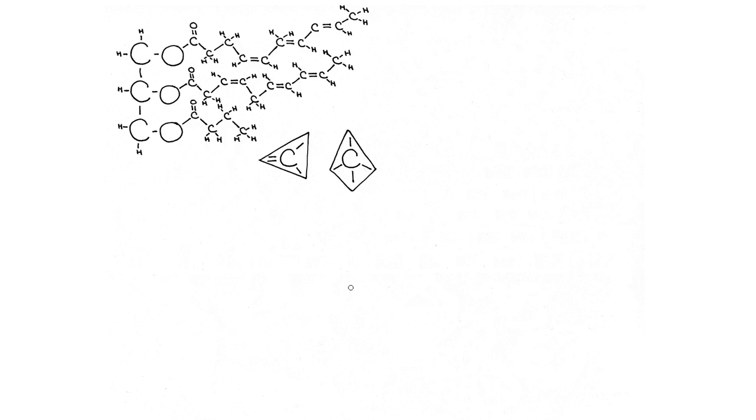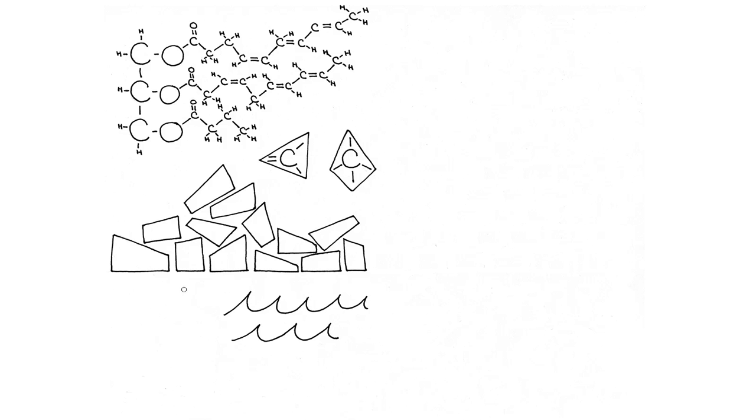Because of these kinks, an unsaturated fat molecule can't pack itself very tightly and neatly with other unsaturated fat molecules, and unsaturated fat is liquid at room temperature. Unsaturated fat makes up vegetable oils like olive oil or corn oil.